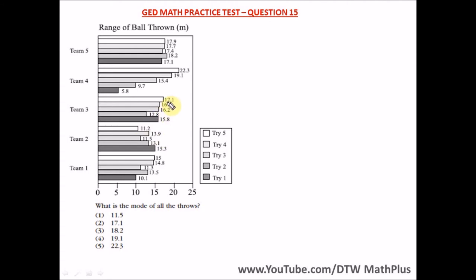But if you come here you have 17.1 here and we have a 17.1 here. So this is the most frequently occurring score, which is 17.1. So our mode in this question is 17.1.